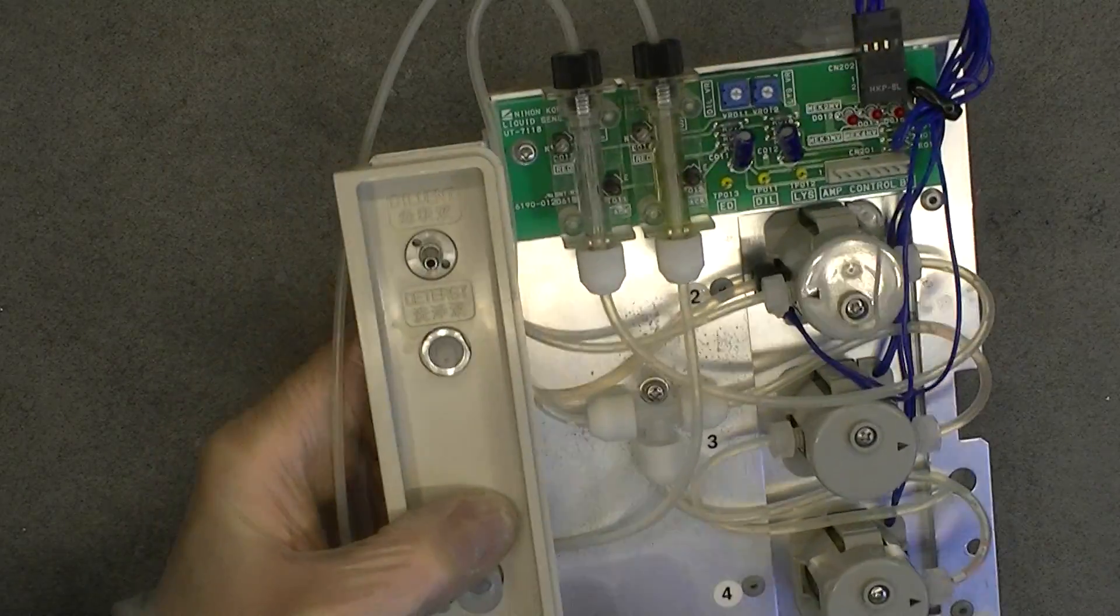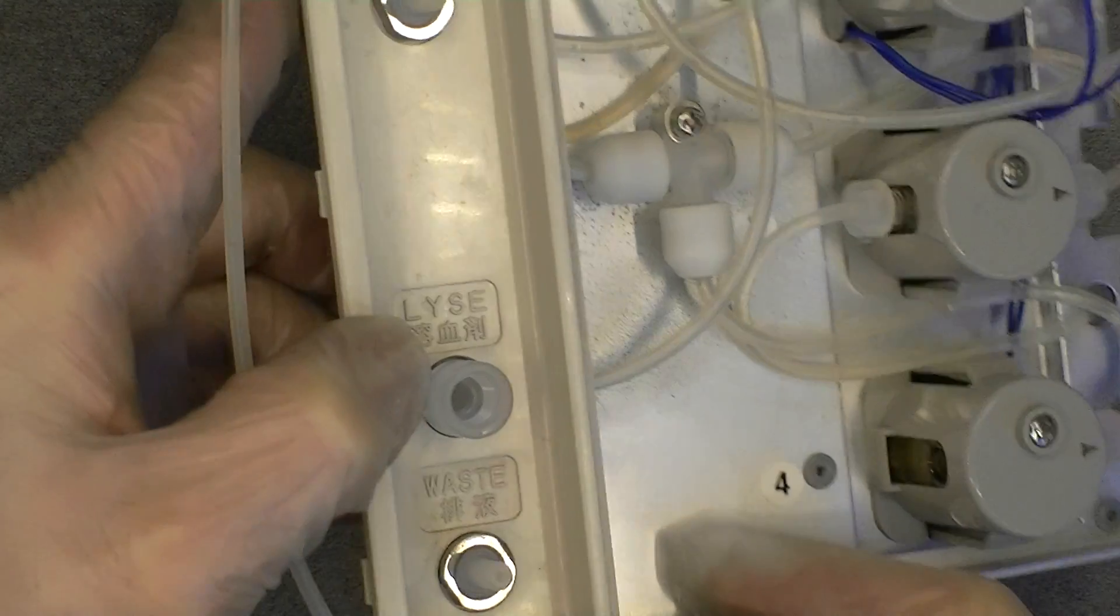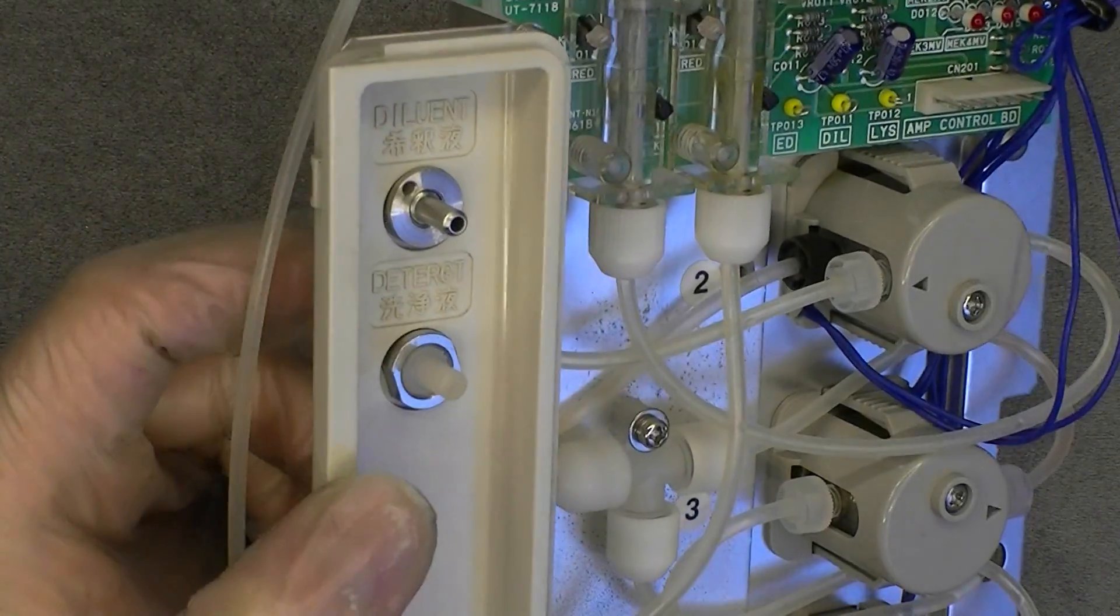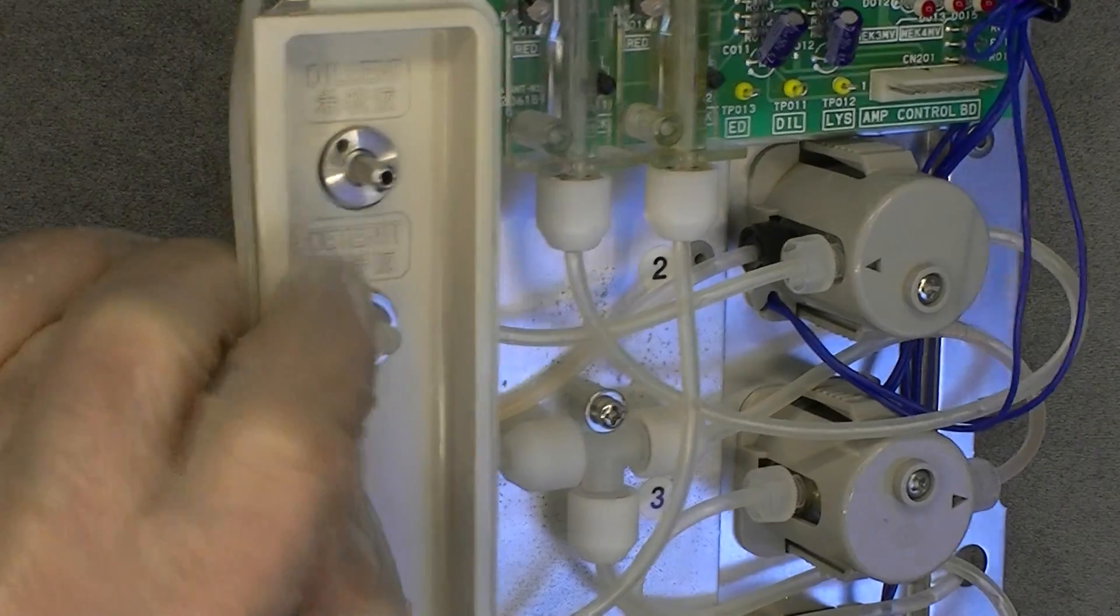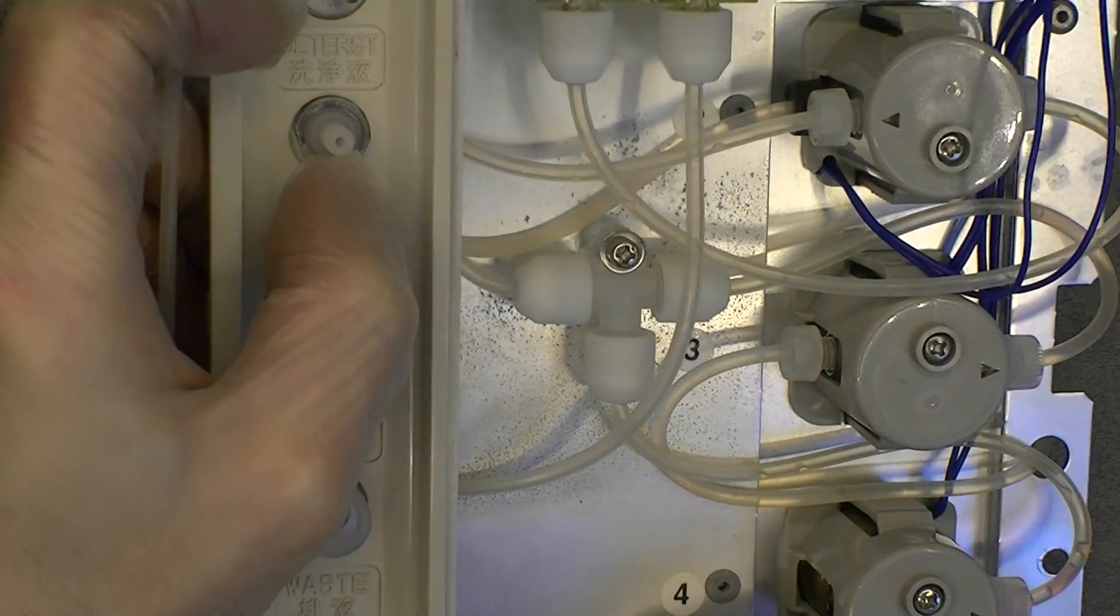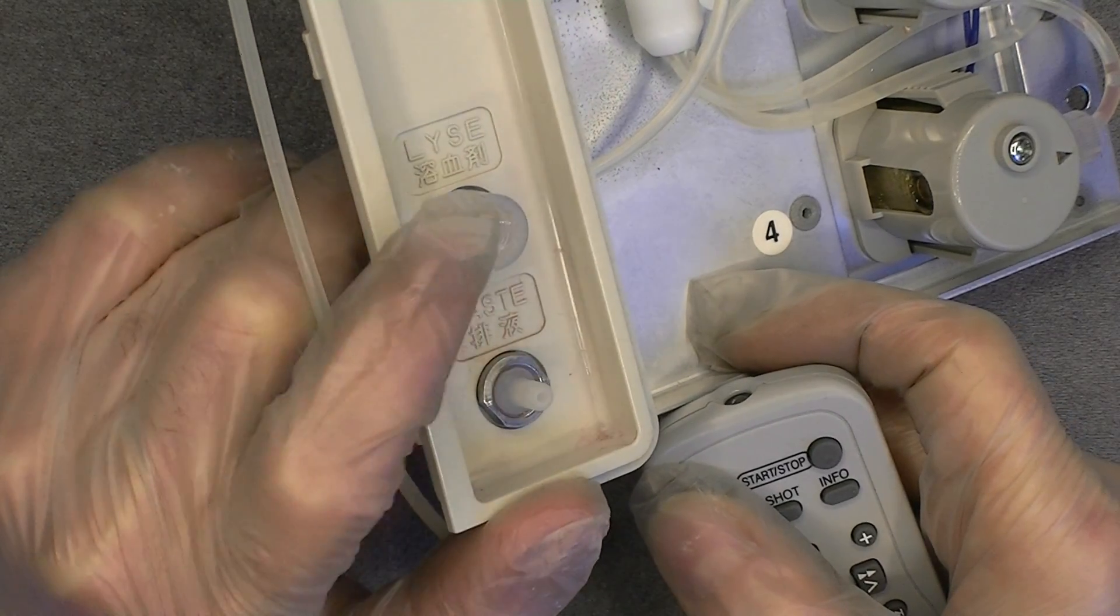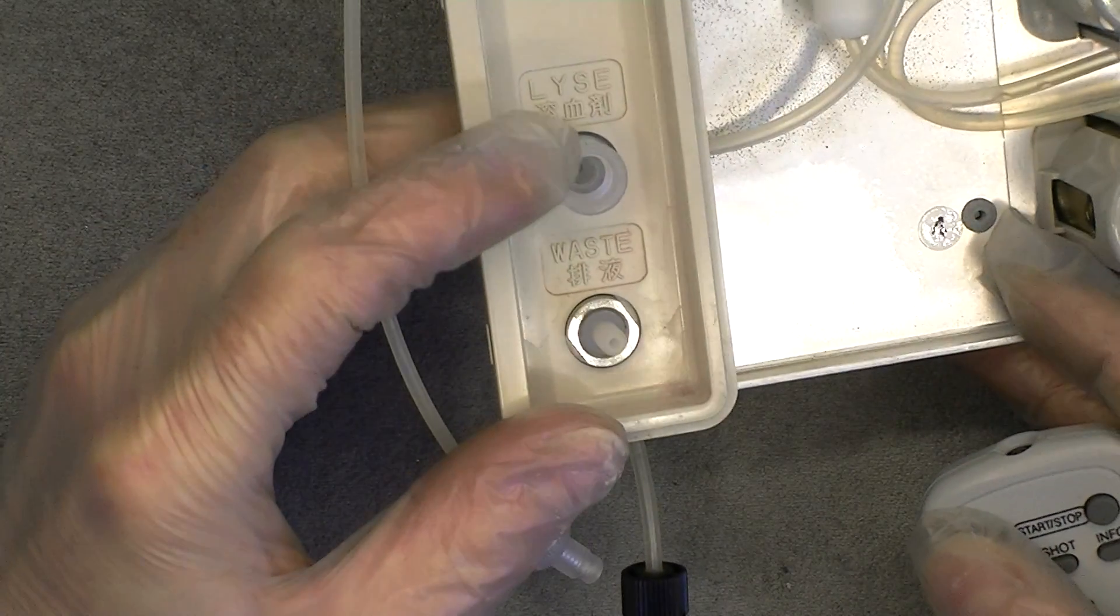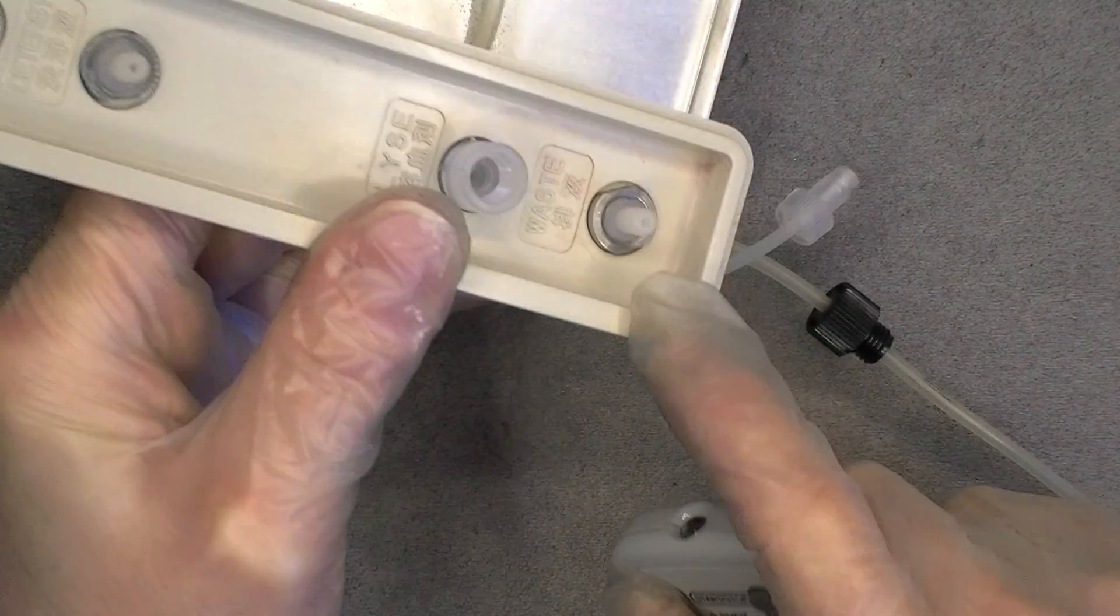So here you have the fittings where the fluids are connected. You have diluent with Japanese writing, you have detergent, you have lyce the main reagent thing, and the waste. You will notice all these connections are not the same. Here we have a metal one with a slotted nut, and here a plastic one with a cut out nut on the side. This one is female fitting. So it happened to fit exactly an air inlet from my patient monitor. So I was able to adapt it and put a pipe on it. And it is the same thread on the waste again.